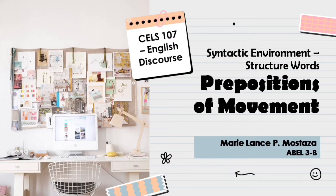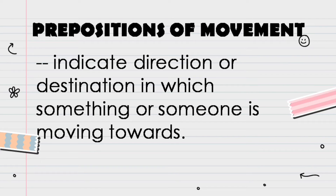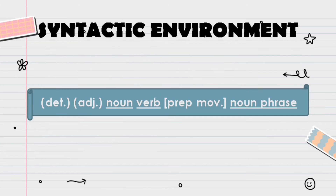Prepositions of movement indicate direction or destination in which something or someone is moving towards. They show movement from one place to another place, and these prepositions are usually used with verbs of motion. The syntactic environment includes an optional determiner, optional adjective, noun, verb, preposition of movement, and the noun phrase. The elimination of the determiner and adjective will not affect the structure of the whole sentence.